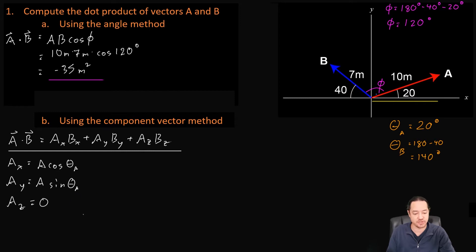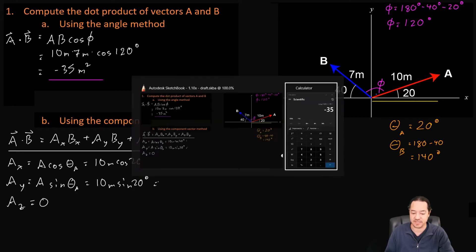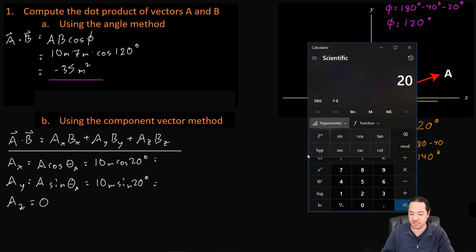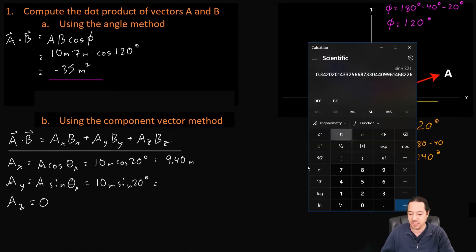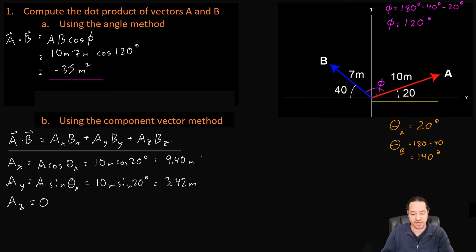Let's do this calculation now. A cosine theta A is going to be equal to 10 meters times the cosine of 20 degrees, and AY is 10 meters times the sine of 20 degrees. So: cosine of 20 degrees times 10 gives us 9.40 meters. And sine of 20 degrees times 10 gives us 3.42 meters. There we go — we've got our A components.